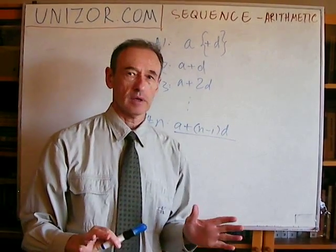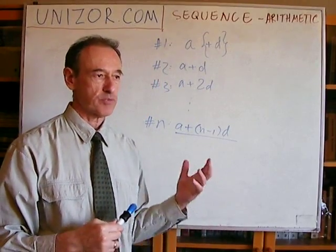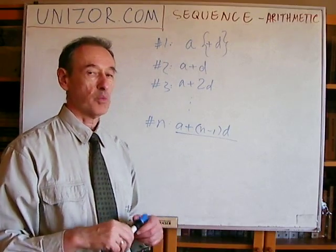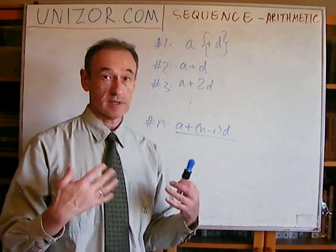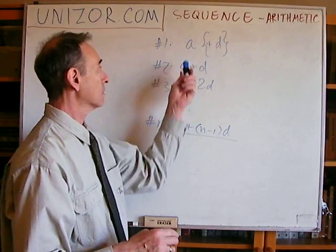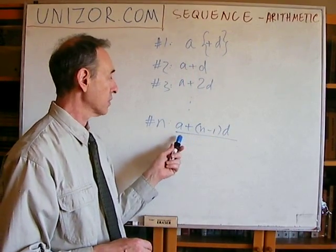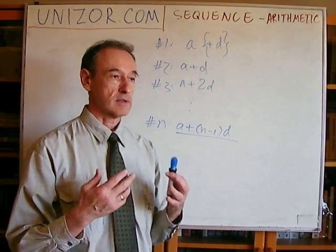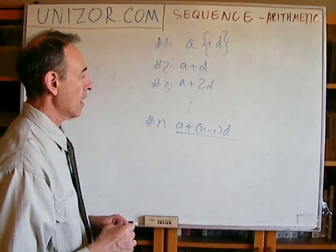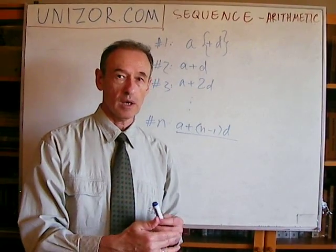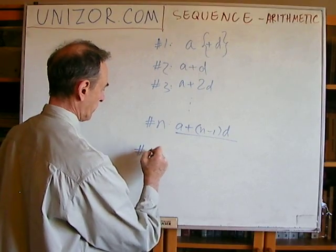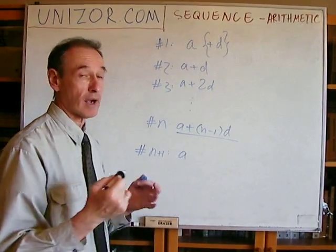In theory, we really have to prove that this formula does what we have promised in defining the arithmetic progression. What did we say as a property — the defining, characterizing property of arithmetic progression? That the first element is A. And indeed, if you put N equals one into this formula, you get N minus one equals zero, so you get A. And the second defining property is that the difference between two consecutive elements — say element N and element N plus one — should be a constant D.